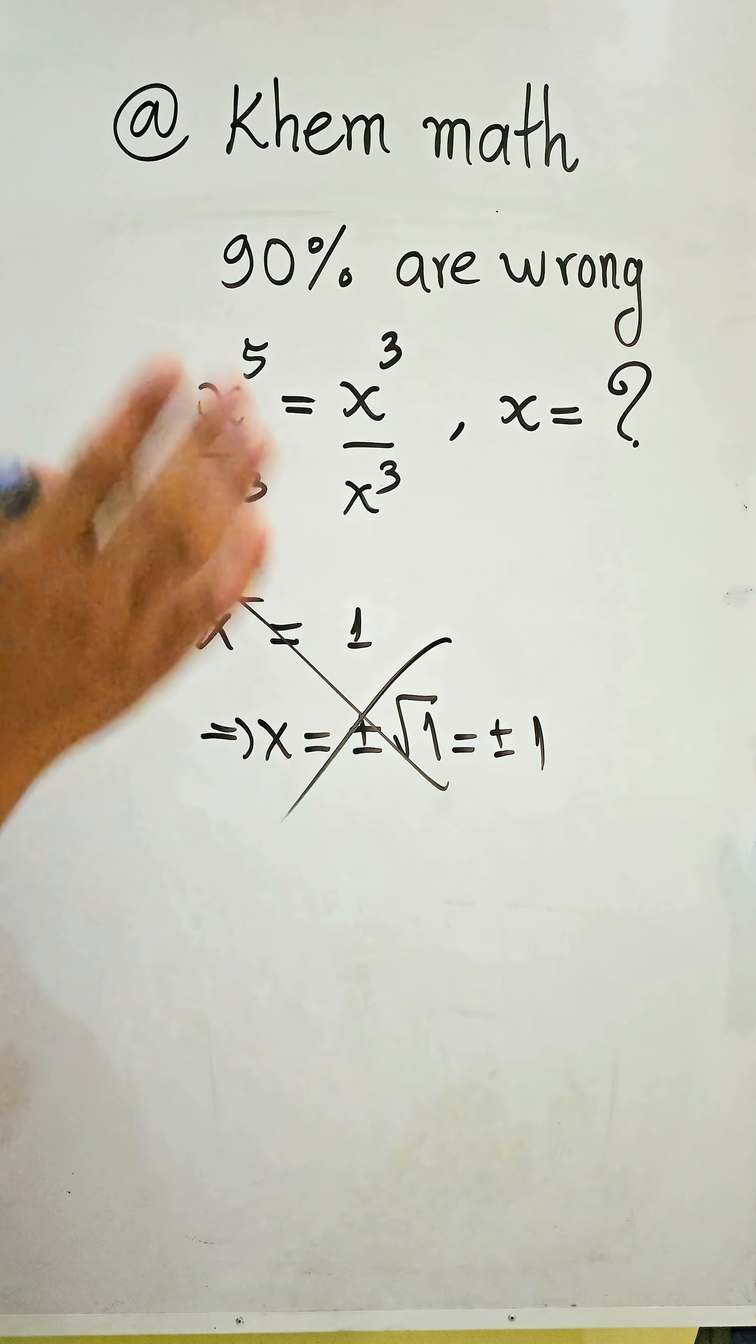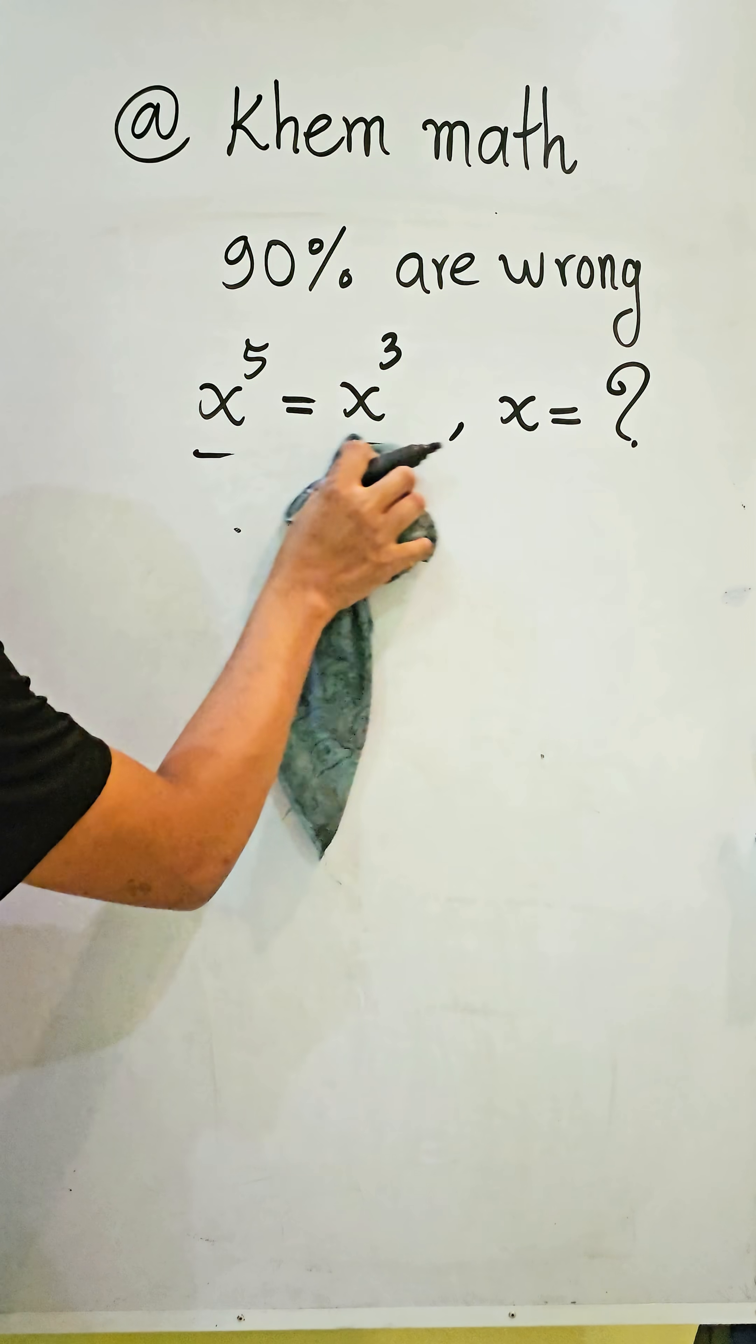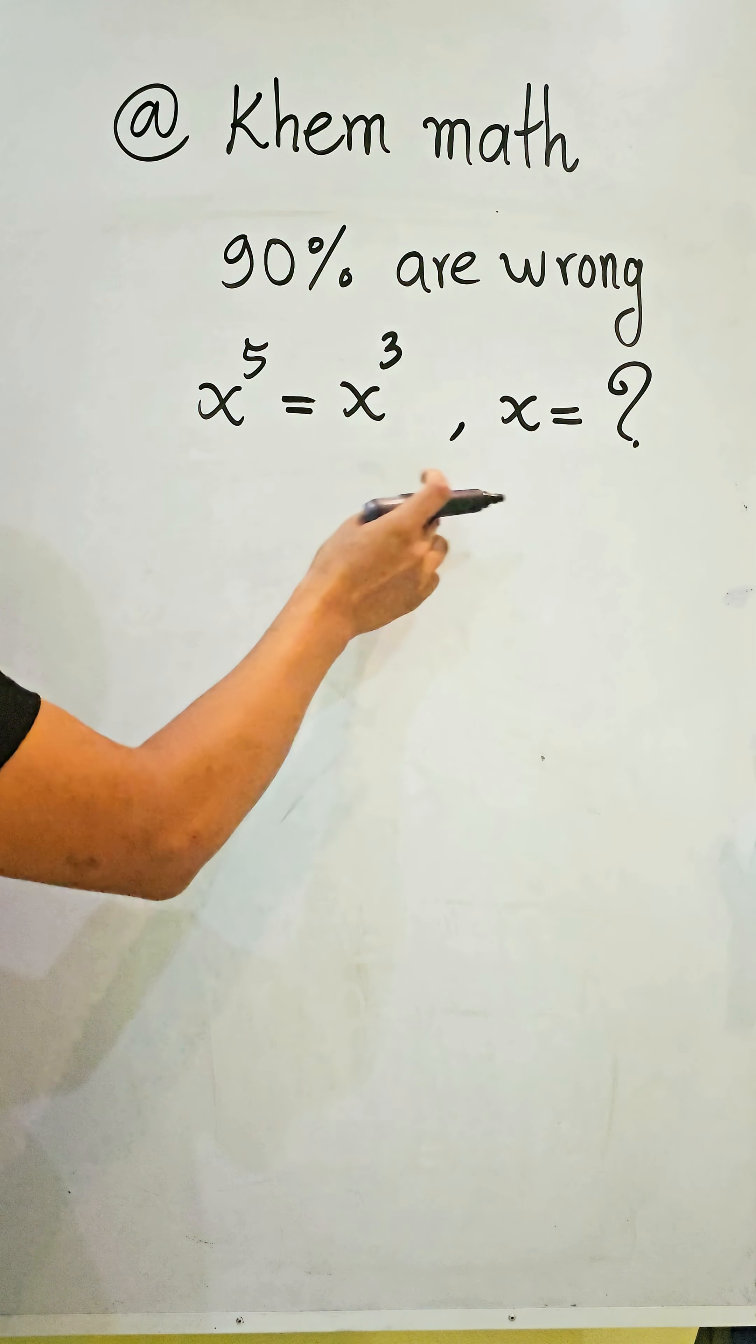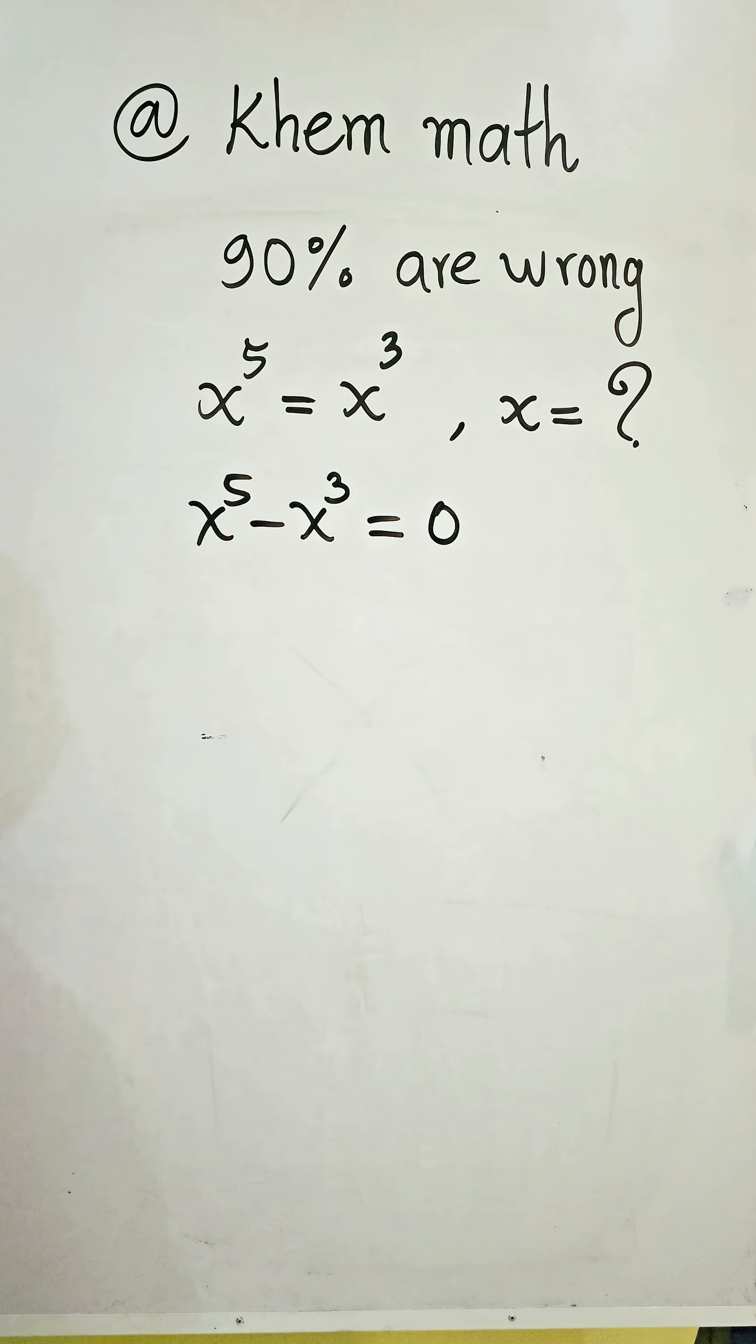So what's the correct way to do this? Look at my video. The first step is we must change x^3 from the right-hand side to the left-hand side, so we get x^5 minus x^3 equals zero.